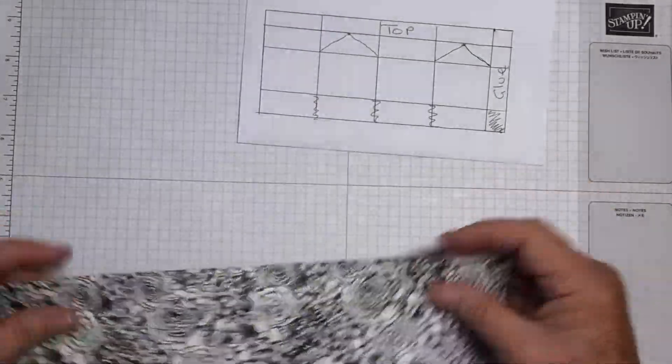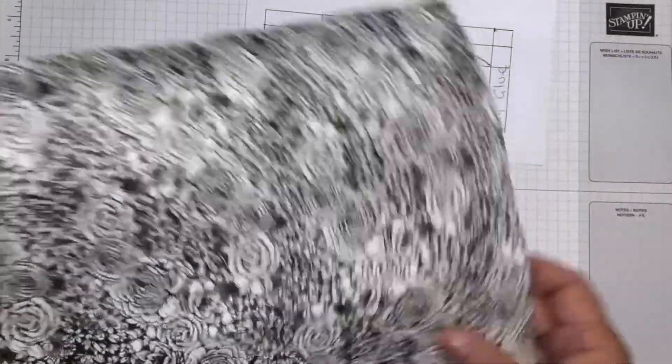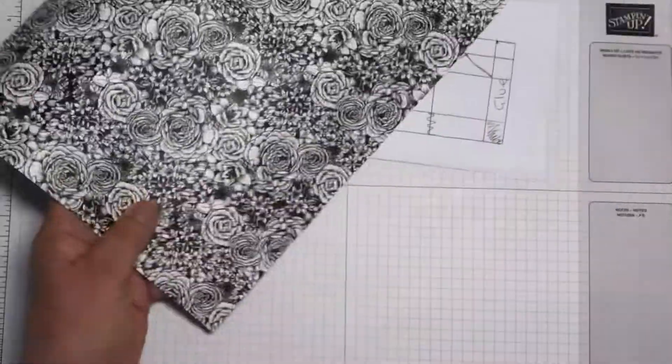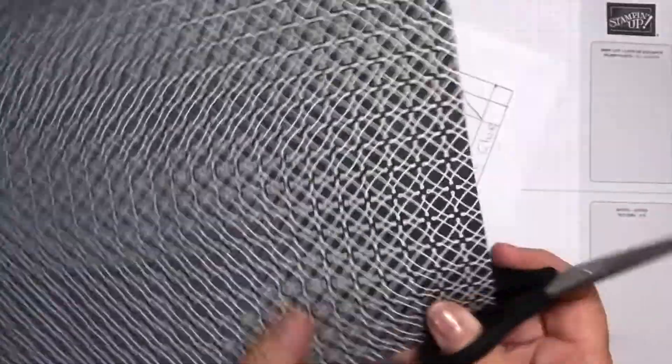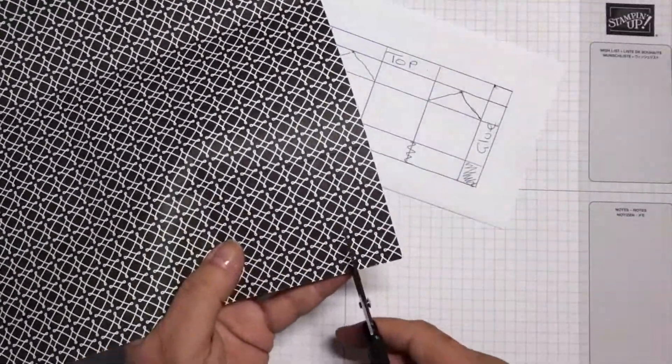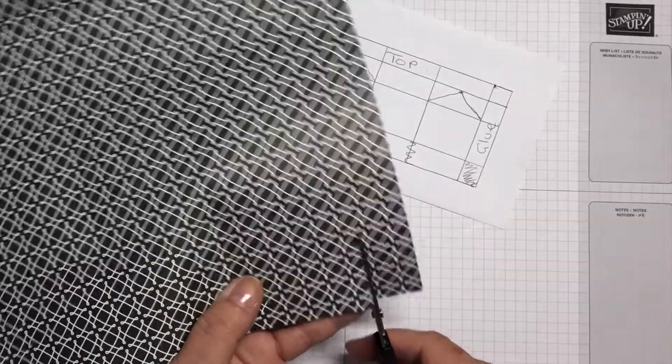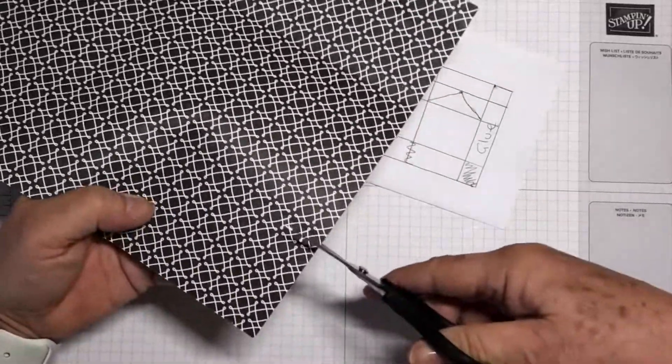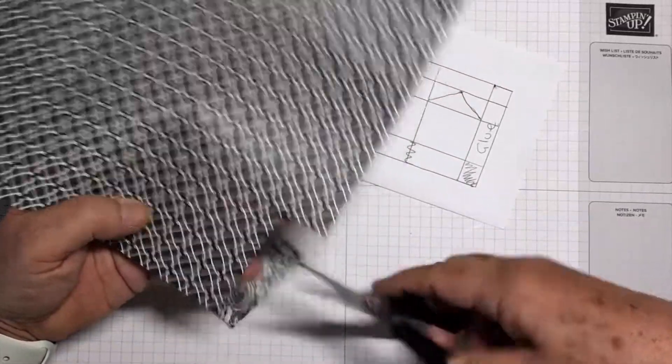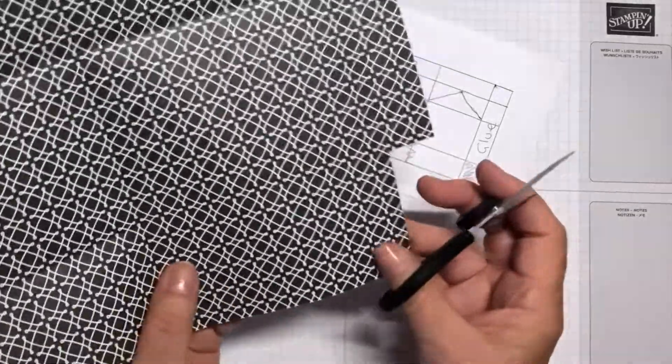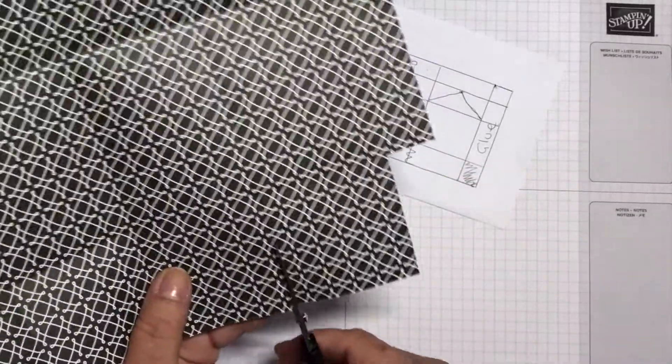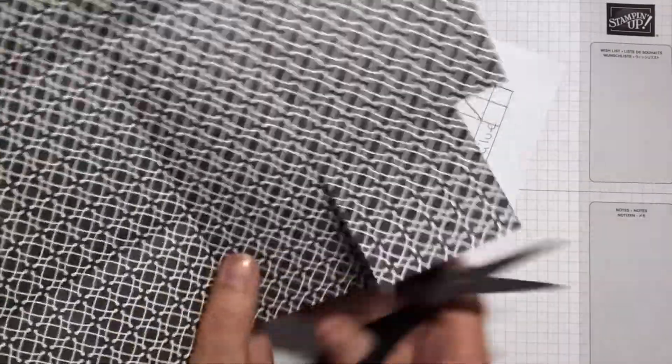We're going to cut away this square here, and then cut up each score line.